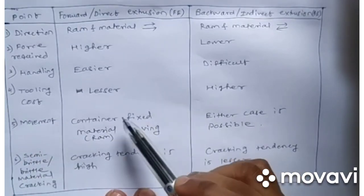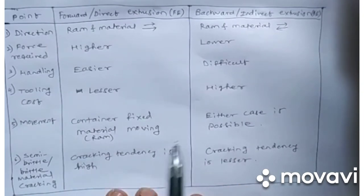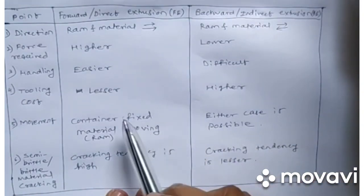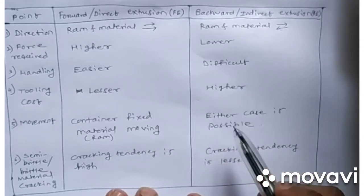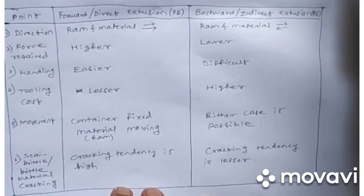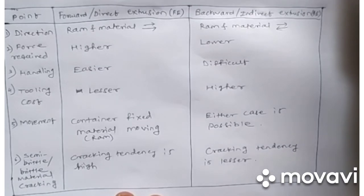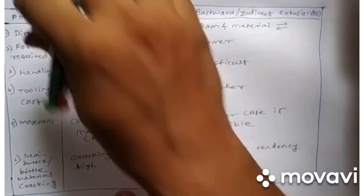Regarding movement: in forward extrusion the container is fixed and the ram moves. In backward extrusion, either the container is fixed and the ram moves, or the ram is fixed and the container moves. For brittle and semi-brittle materials: in forward extrusion wall friction causes higher cracking tendency, whereas in backward extrusion there is no wall friction, so cracking tendency is lower.